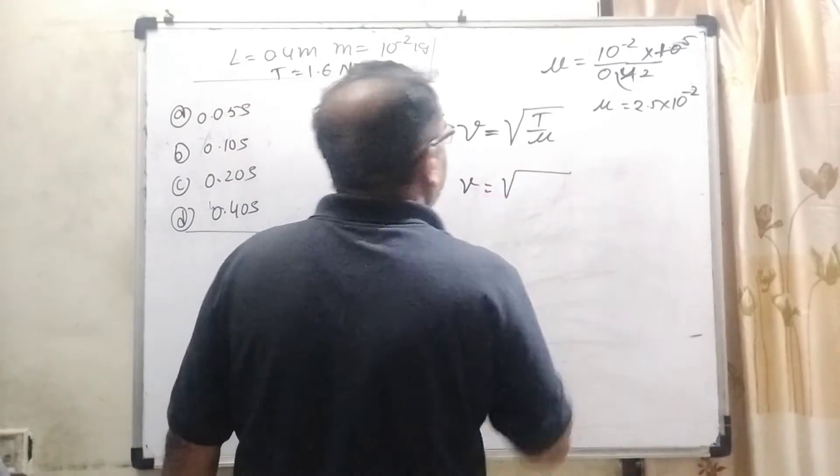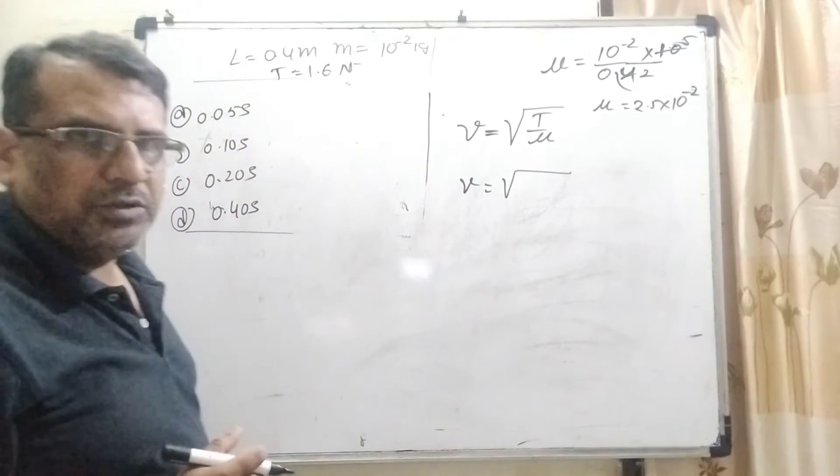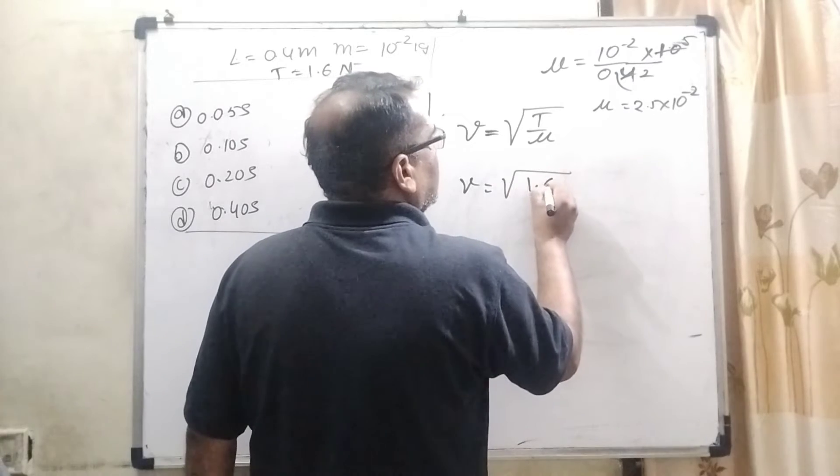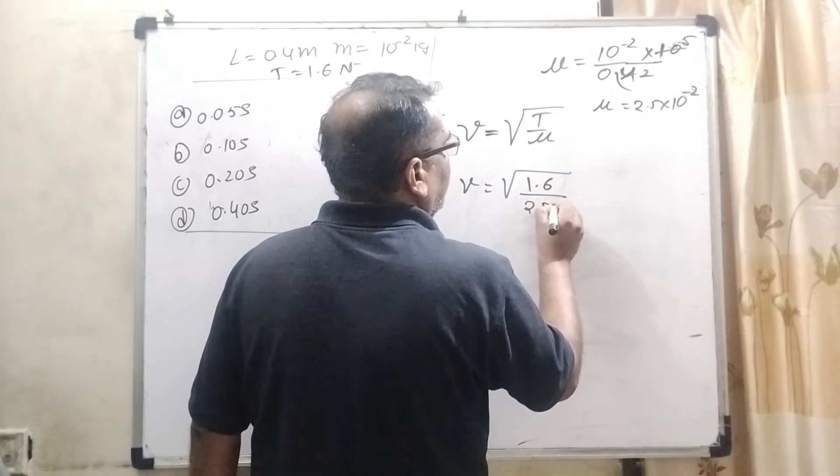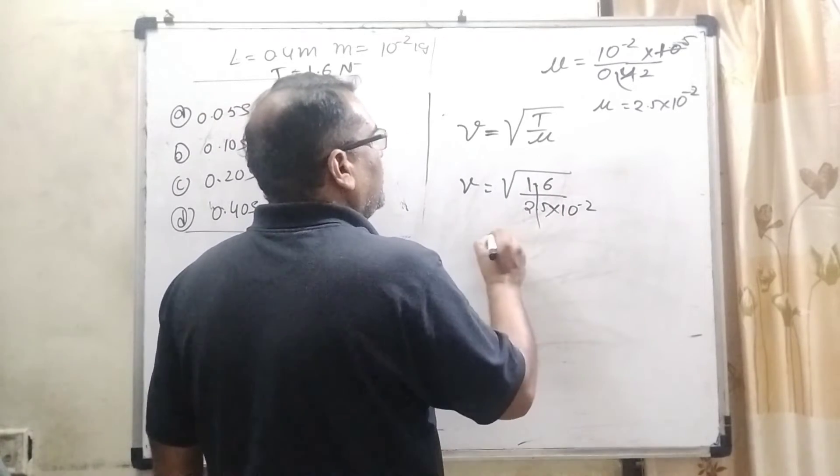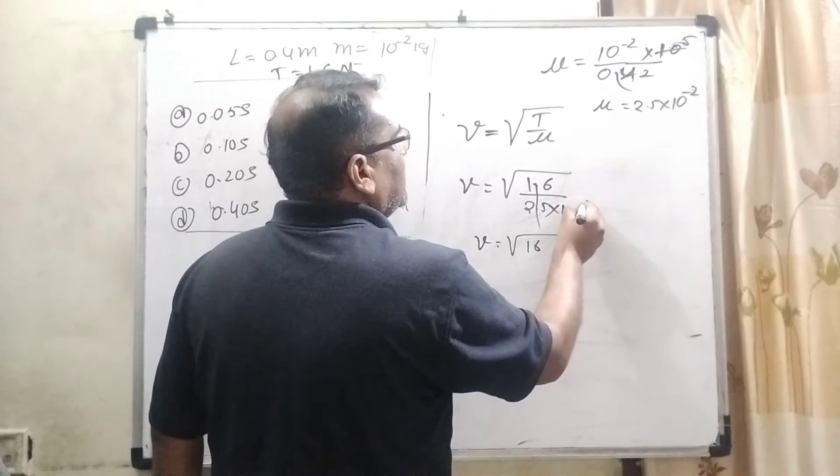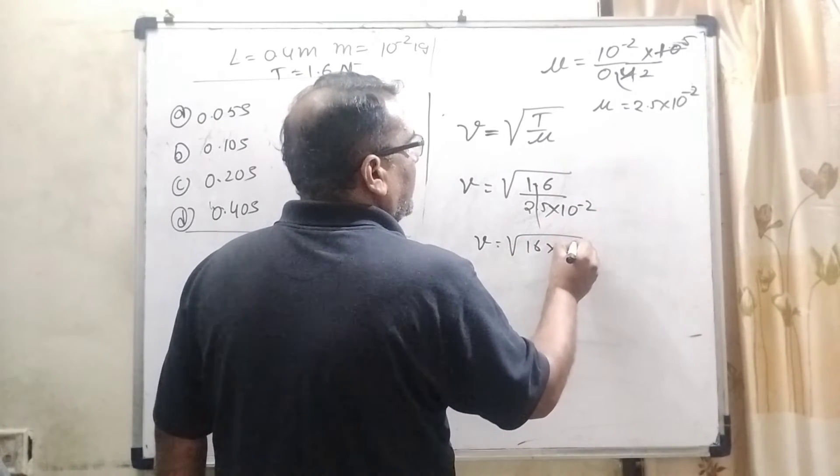Then V equal to, what is the tension force? Tension force is given 1.6 Newton. So, 1.6 upon 2.5 into 10 raised to the power minus 2. This decimal is removed and by using exponent rule, this reaches in numerator and becomes positive.